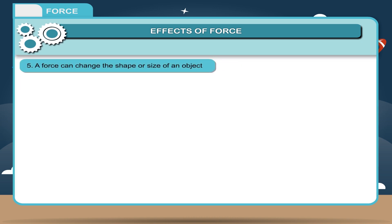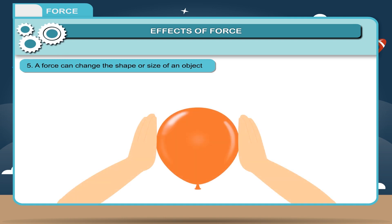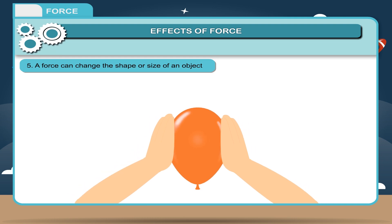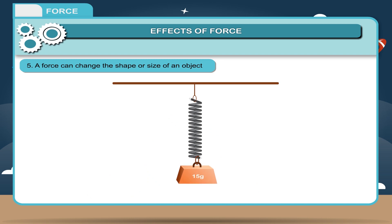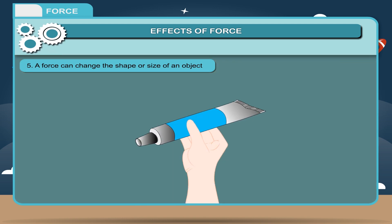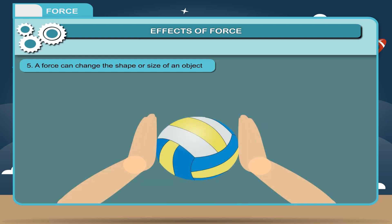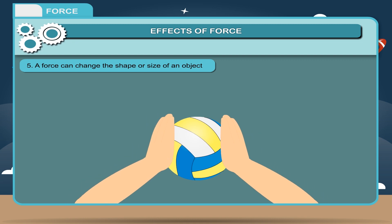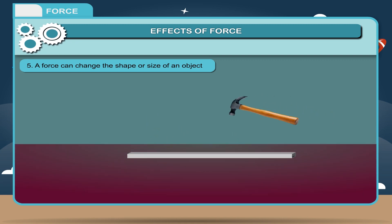A force can change the shape or size of an object. For example, when an inflated balloon is pressed between two hands, its shape changes. Similarly, when a spring is pulled beyond its limits, its shape changes. The shape of a gel tube changes when it is pressed or squeezed. The shape and size of a ball changes on pressing between two hands, and the shape of an iron strip changes on hammering.